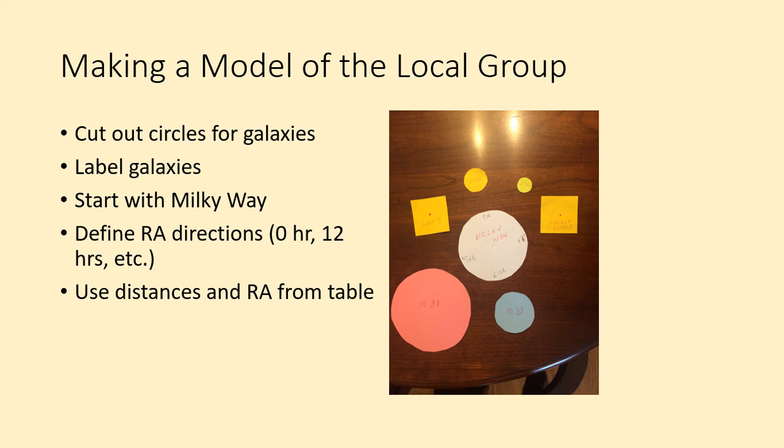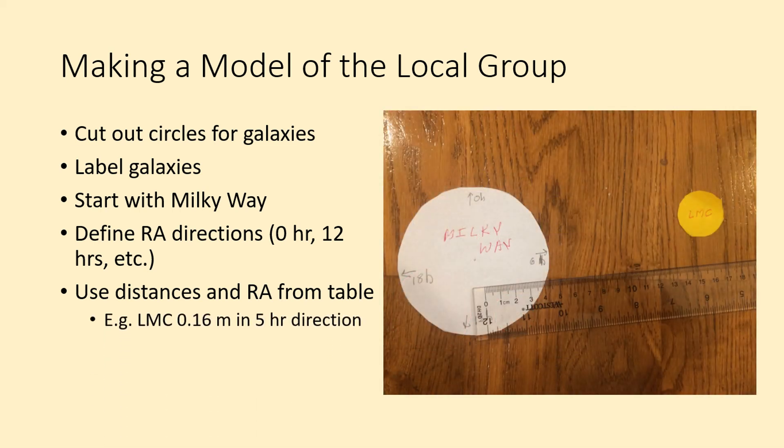For example, the Large Magellanic Cloud is only 0.16 meters, or 160 millimeters, from the Milky Way in the 5 hours direction. This is almost at right angles to the line between 0 hours and 12 hours.